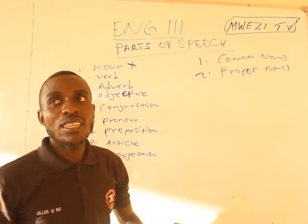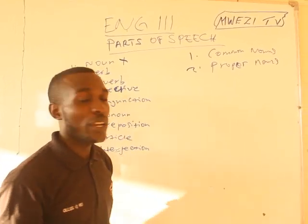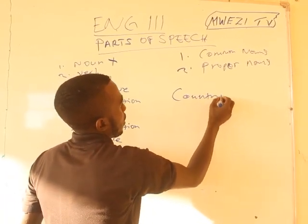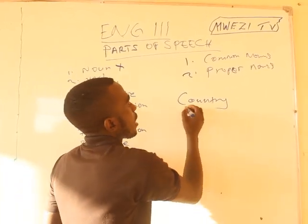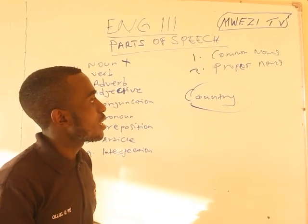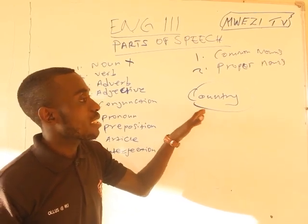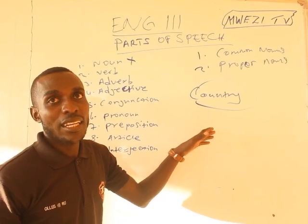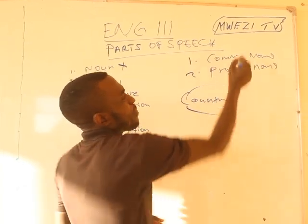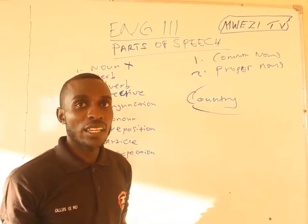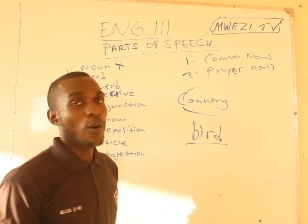Common nouns are words that represent the whole — a general category. For instance, the word 'country' is a common noun. When I say 'country,' this is just a general word. We have specific countries like Zambia, the United States of America, Iran, Ukraine, Singapore, and others. So 'country' is an example of a common noun. Another example is the word 'bird' — that is also a common noun.